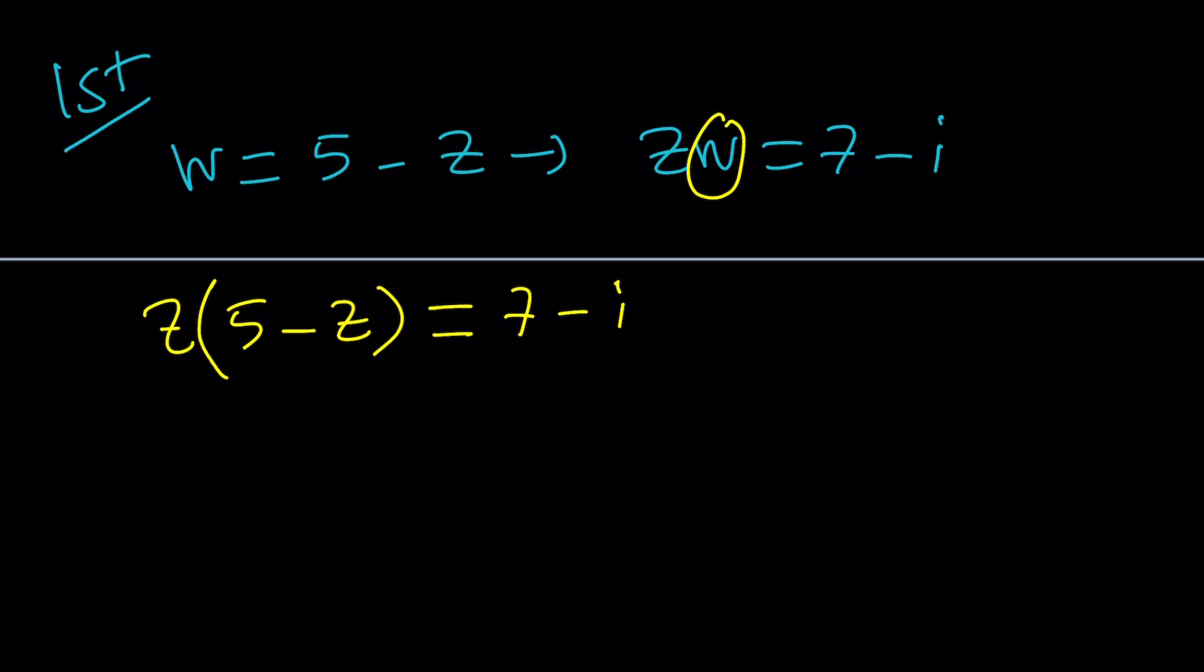How nice, right? Distribute 5Z minus Z squared equals 7 minus I. And then Z squared minus 5Z plus 7 minus I equals 0. Now, if you were able to find two numbers, never mind, we'll talk about that later.